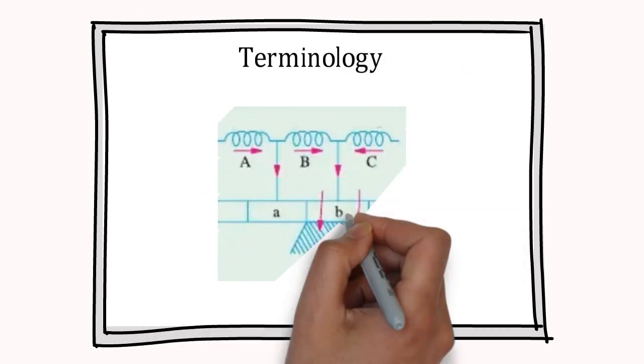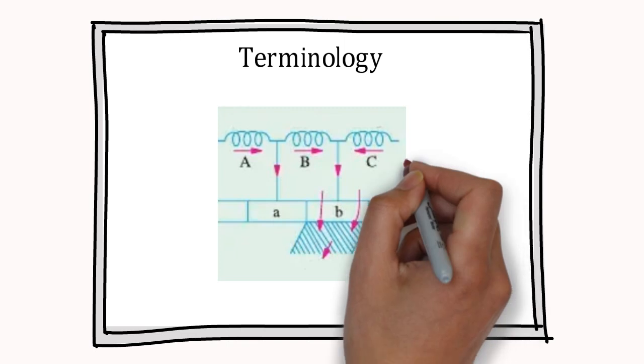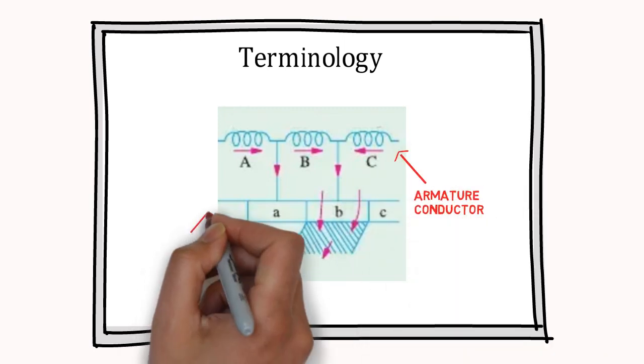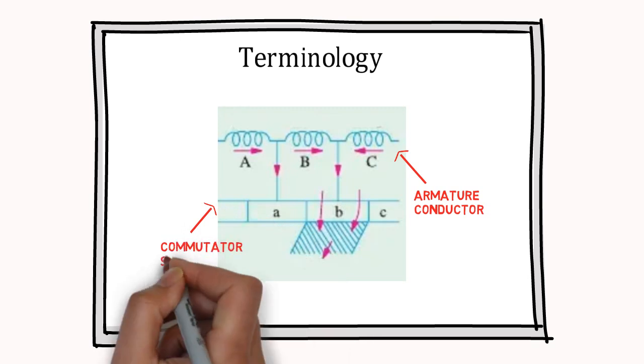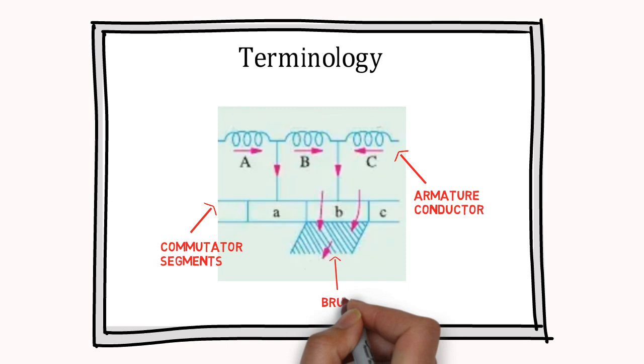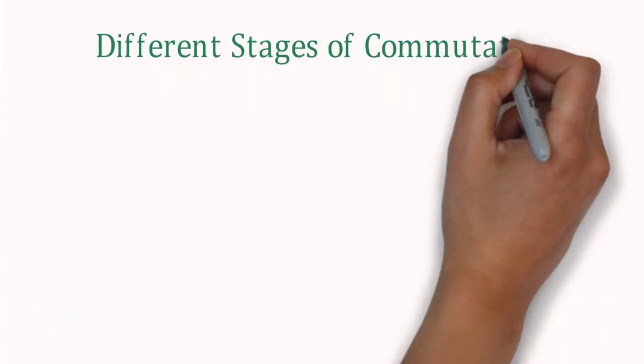Here, example of generator is taken. It's clearly seen that armature conductor A, B, and C is connected to commutator segments. Moreover, current is taken out from brush. There are total 5 cases to elaborate commutation process.